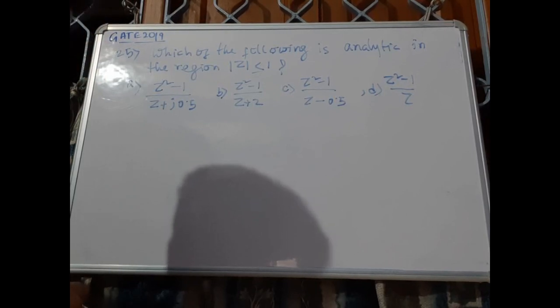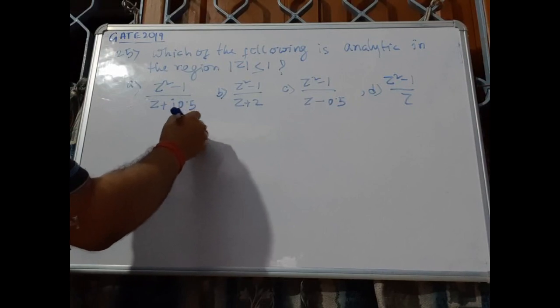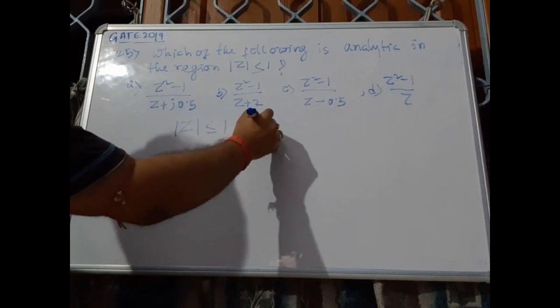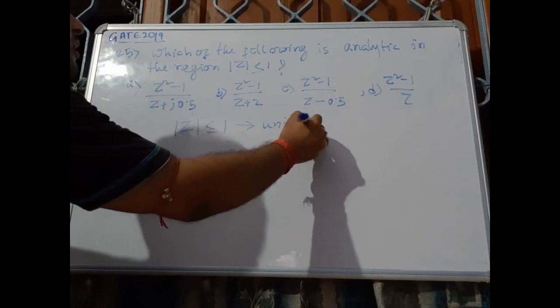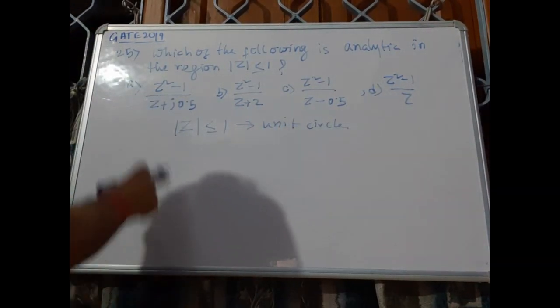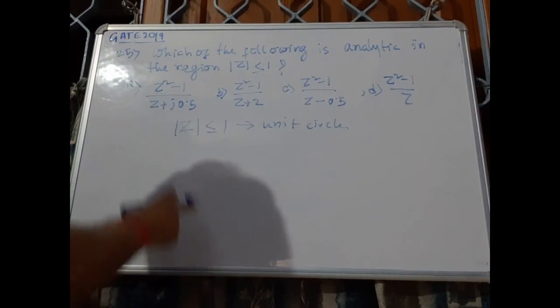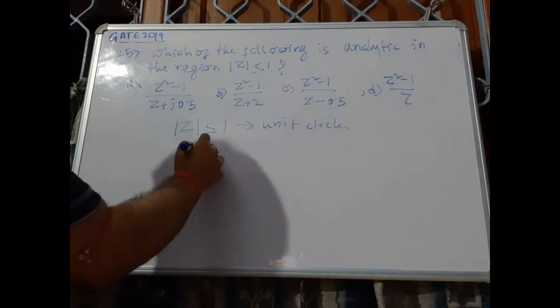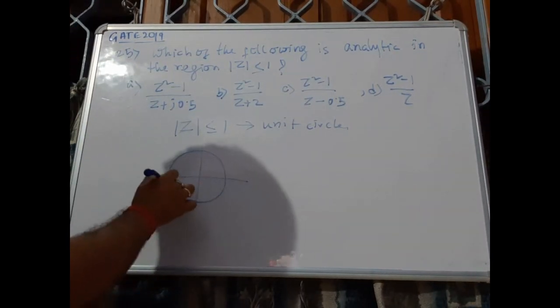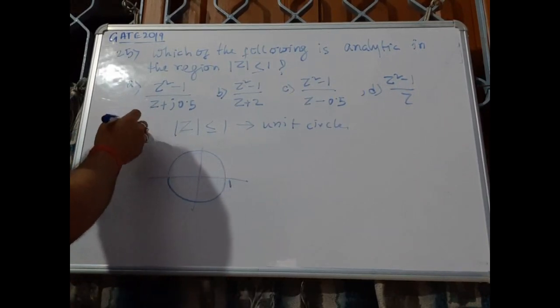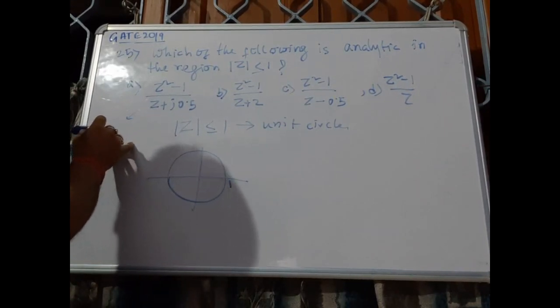As |z| ≤ 1, this denotes a unit circle. If we find the singular points of these four options, we have this unit circle. If you find the singular points, these have the singular points at...